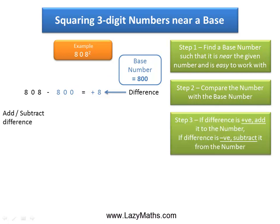The third step is to take the original number 808 and then add that difference to it to get 816.